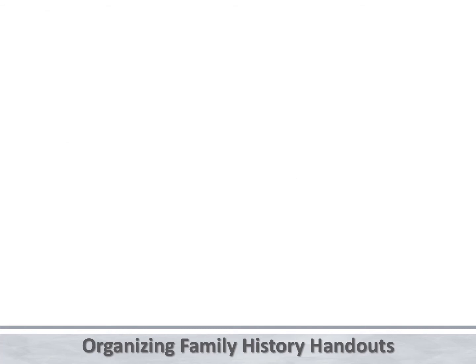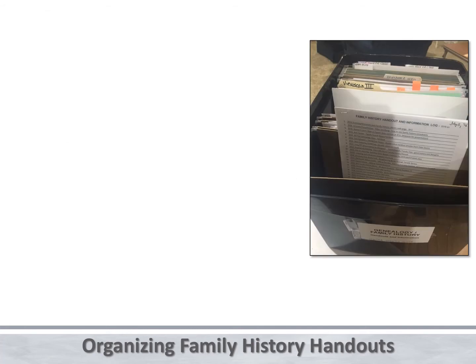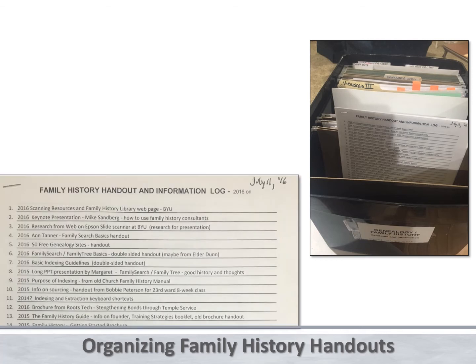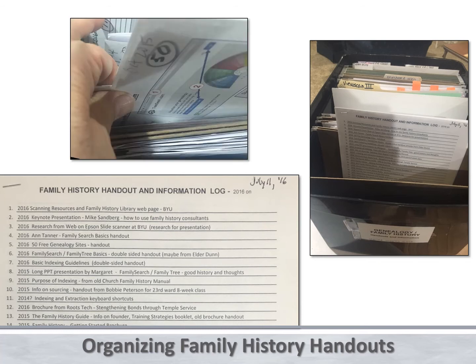I decided to use Dad's idea. I am using file boxes that can be inexpensively purchased at Costco, Walmart, etc. I labeled the front of the box "Genealogy / Family History Handouts and Information." I created a log in Excel, and as I file the items by number, I type the description in Excel containing the date of the item, where I got it, what it is, and any other pertinent information. I mark that number on the actual item — handouts, notes, or whatever — so it appears in the upper left corner as I file them.